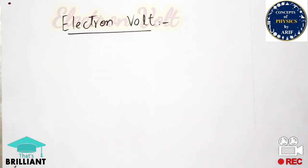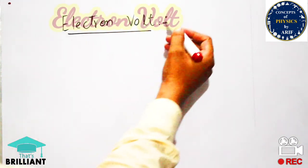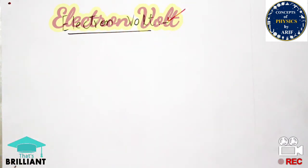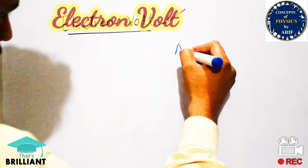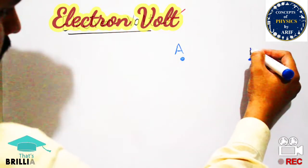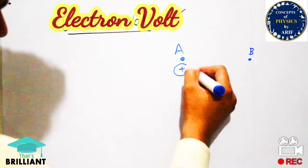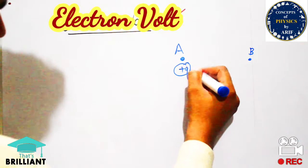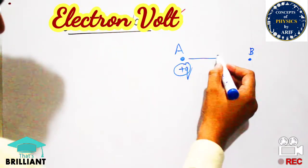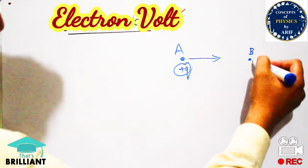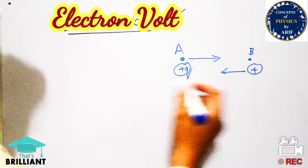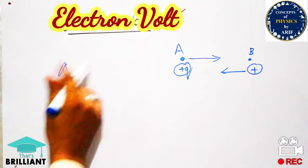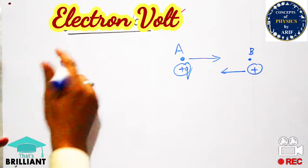Hi guys, welcome to my YouTube channel. In this video I will briefly discuss about electron volt. To understand this, we will assume that there are two point charges present — one is known as plus q and the other is also known as plus q. The potential between these two charges is known as potential difference.